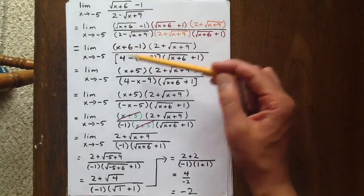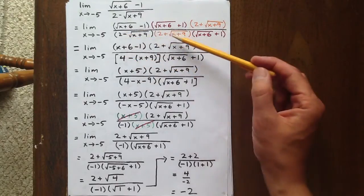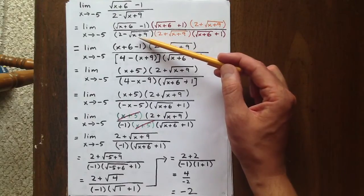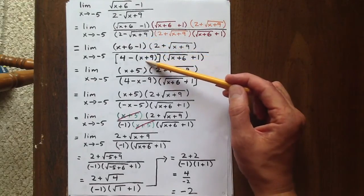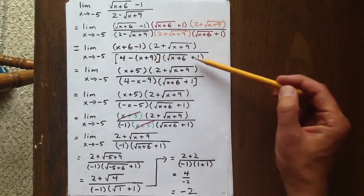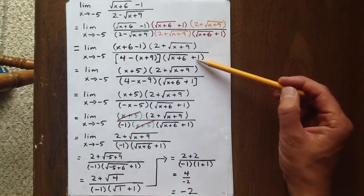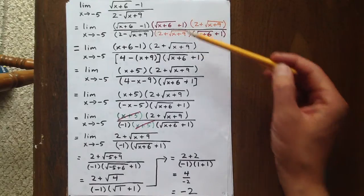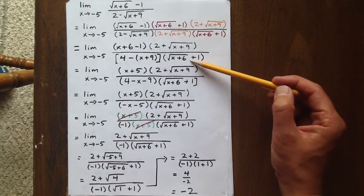In the denominator, the 2 times 2 will be 4, the middle terms will cancel out, and what we'll have left is a subtracted term of x plus 9, as well as the red factor, which was brought into the denominator because it was originally brought into the numerator as well.